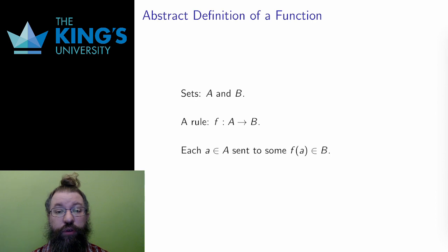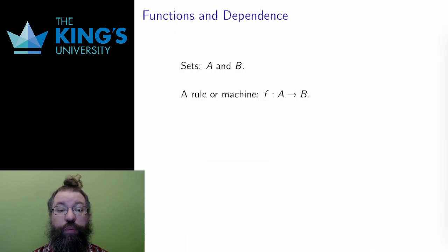Each element A in the first set is sent to some element written f of A in the second set. This concept takes the machine or process from the first concept and gives mathematical clarity, saying that the machine or the process has a starting point, the set A, and an ending point, the set B.